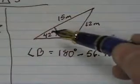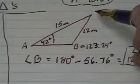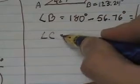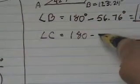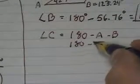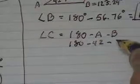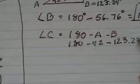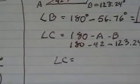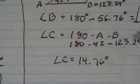Now, if you know angle A and you know angle B, can you find angle C? Well, sure you can. How do you find angle C? It's going to be 180 minus A minus B, which is 180 minus 42 minus 123.24. And angle C is going to be 14.76 degrees.